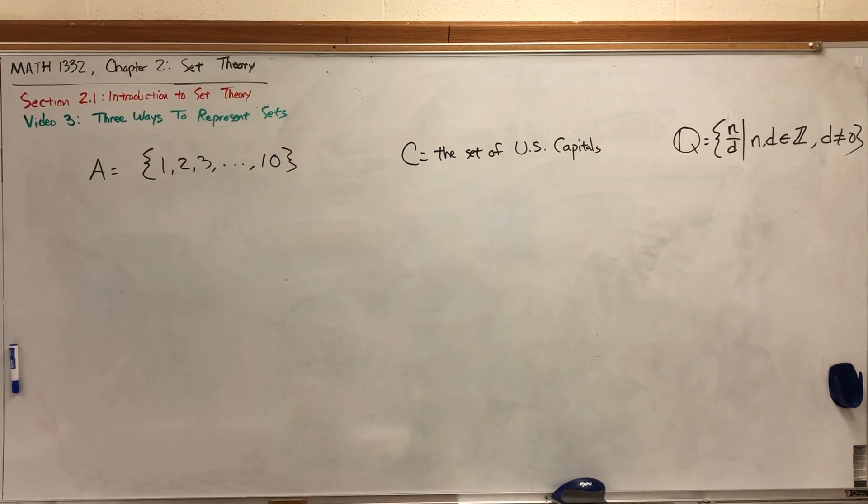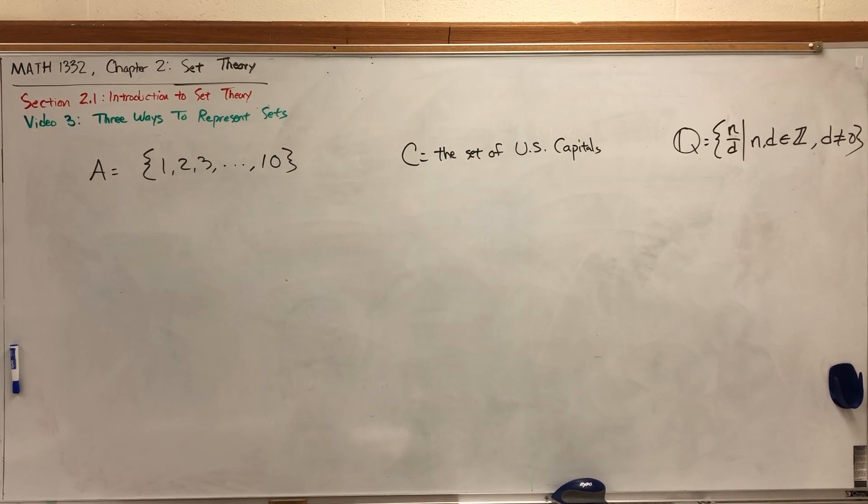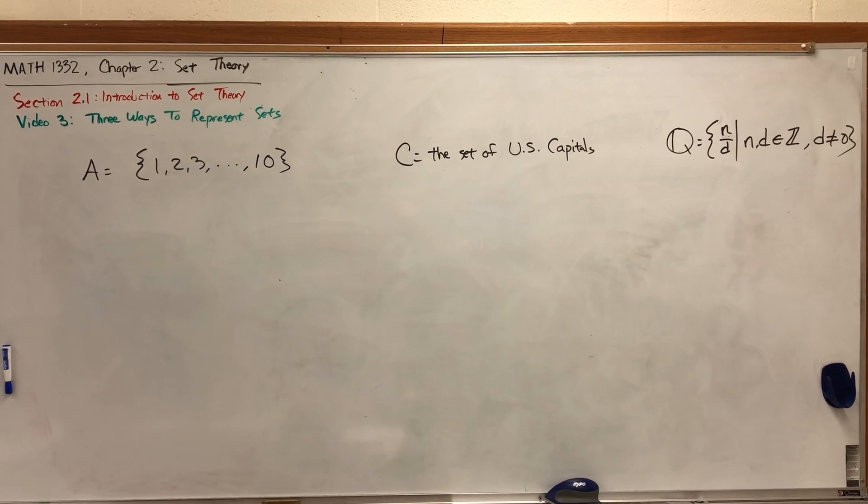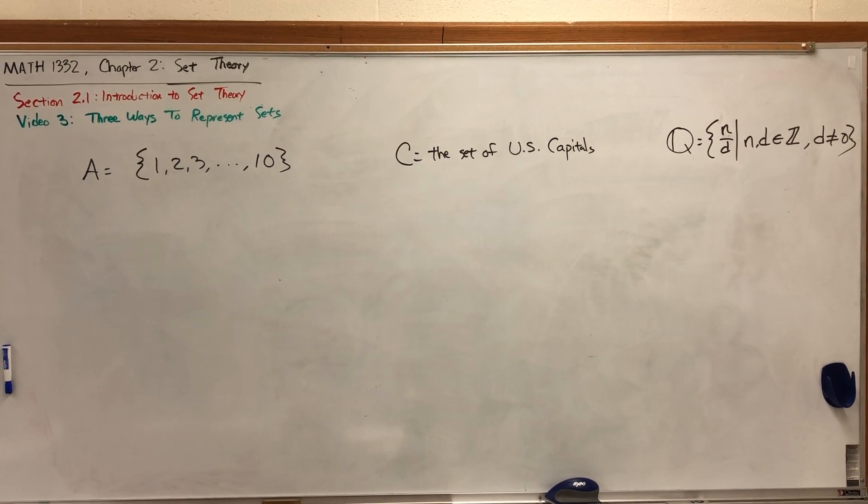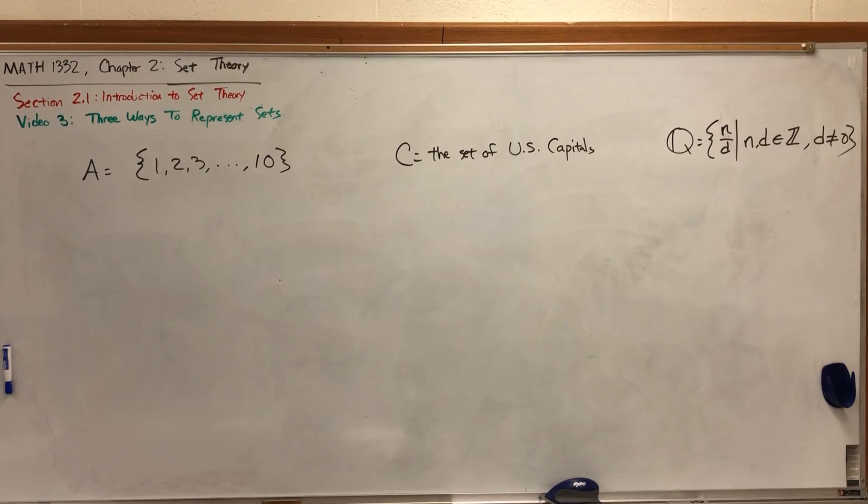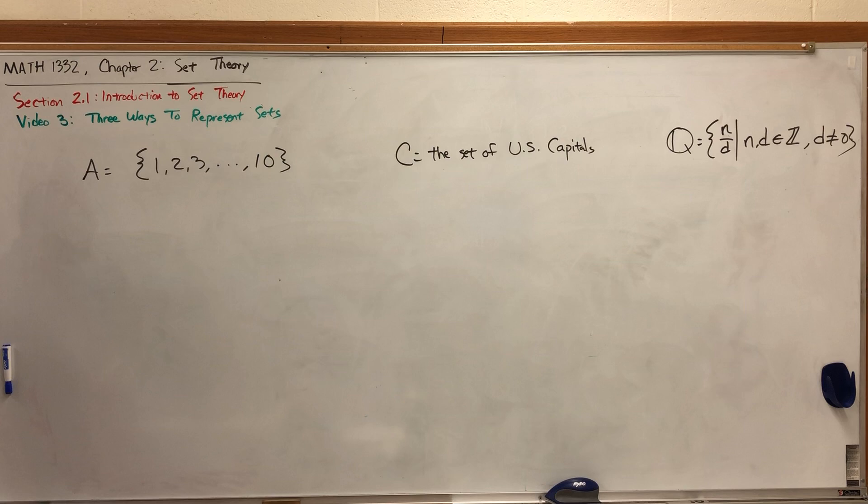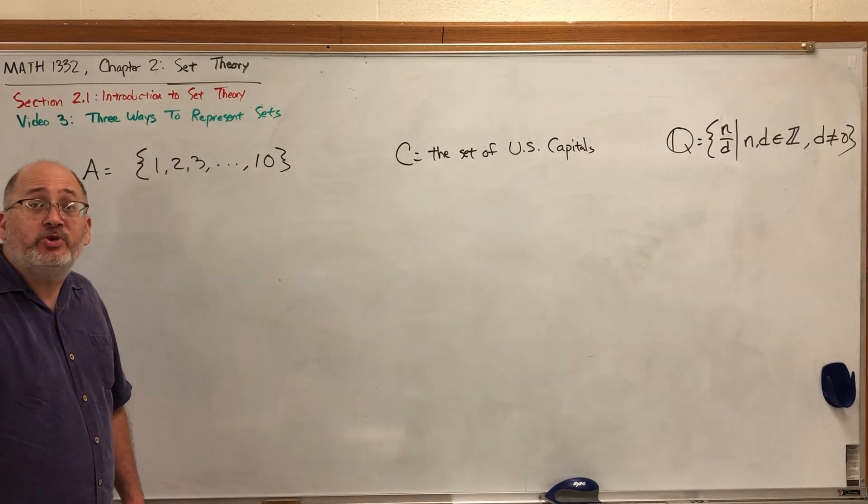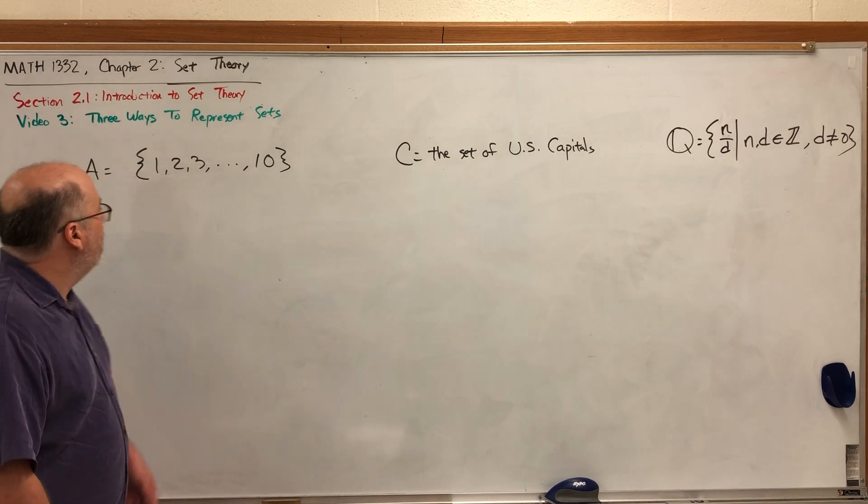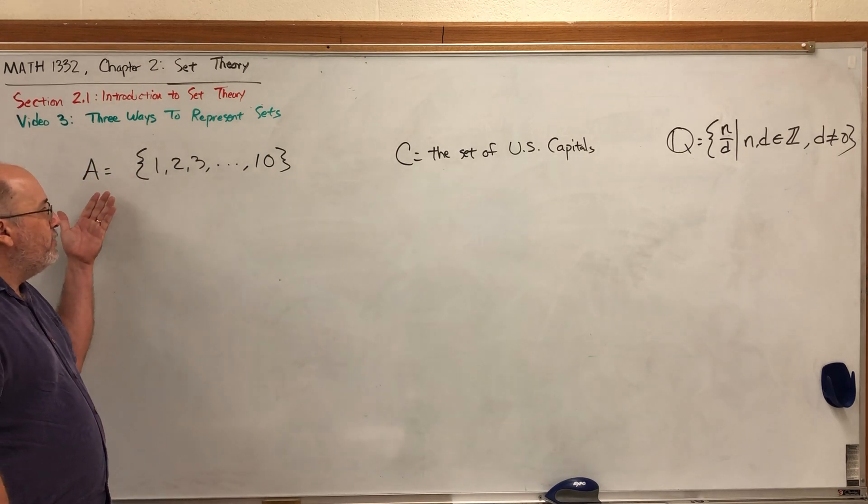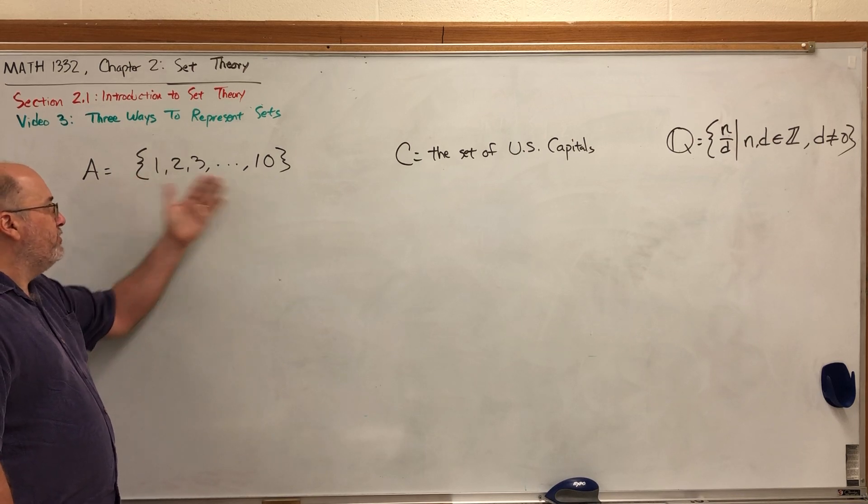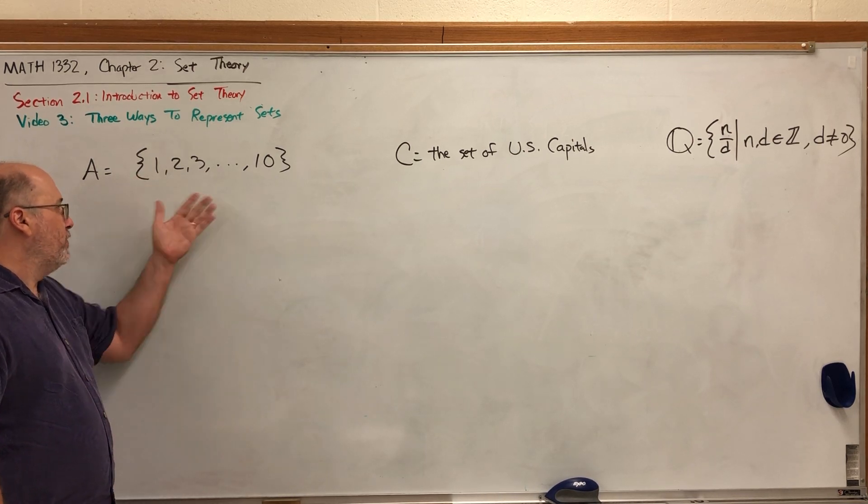Math 1332 chapter 2 set theory, section 2.1 introduction to set theory, video 3: three ways to represent sets. On the board you'll see three sets that were used in previous videos. In the first video we used set A, which we defined to be the set containing the counting numbers 1 through 10, or the whole numbers 1 through 10, or the integers 1 through 10.